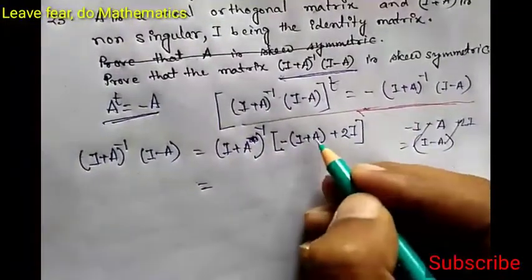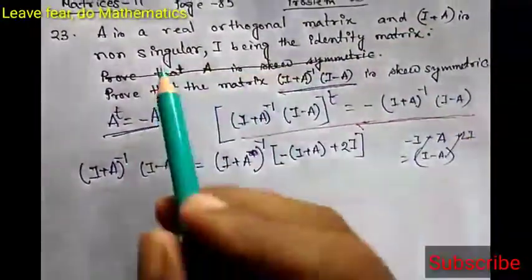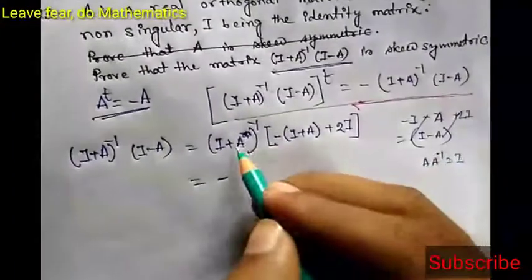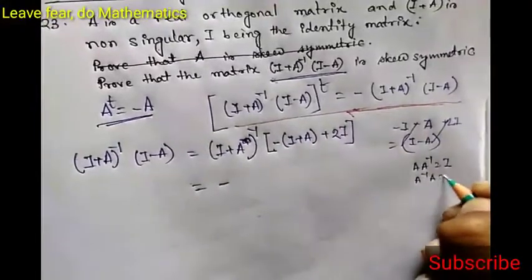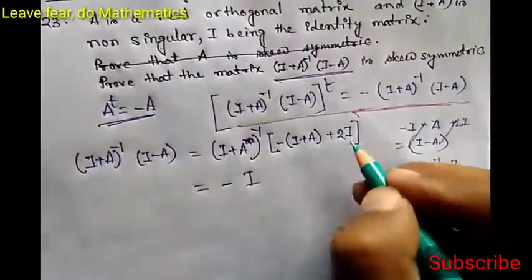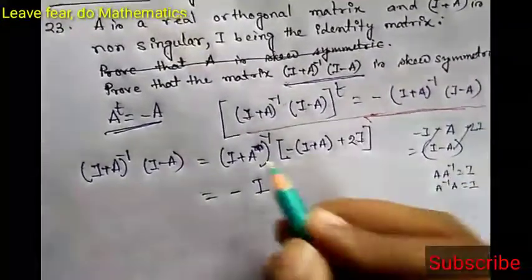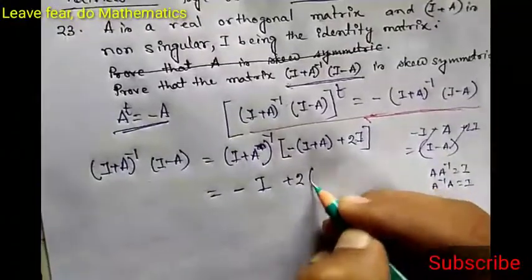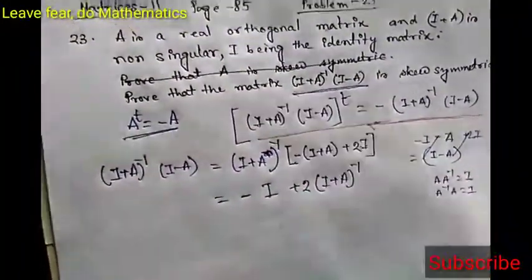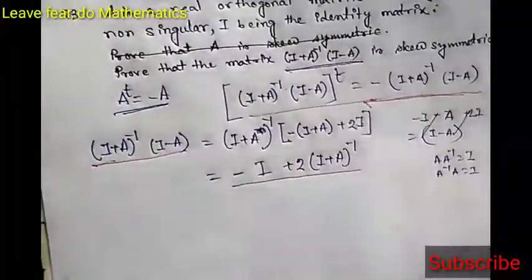So (I plus A) inverse times [(I plus A) minus sign] — the minus sign comes first, then (I plus A) inverse into (I plus A). Since I plus A is non-singular, that means I plus A is invertible, so (I plus A) inverse times (I plus A) equals the identity matrix, because A times A inverse equals I. So (I plus A) inverse into (I plus A) equals I, giving minus I. And 2I times (I plus A) inverse gives 2 times (I plus A) inverse. So (I plus A) inverse into (I minus A) equals minus I plus 2(I plus A) inverse.